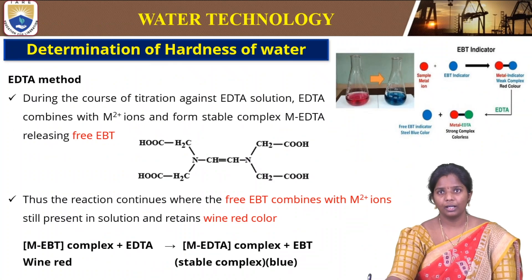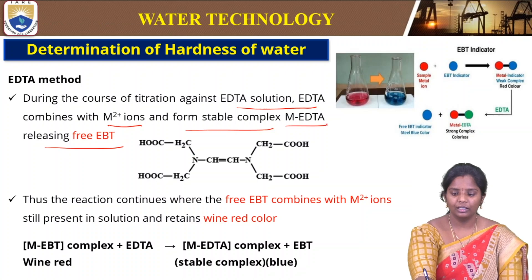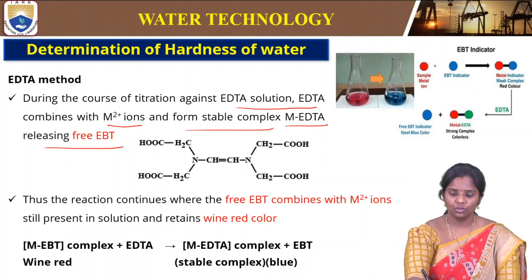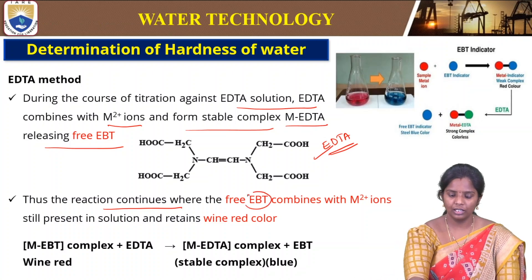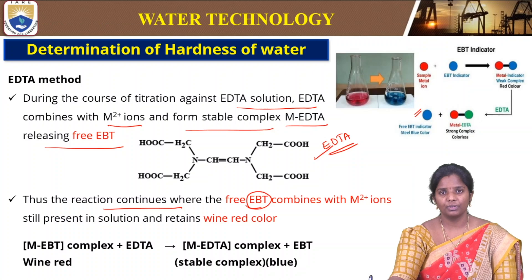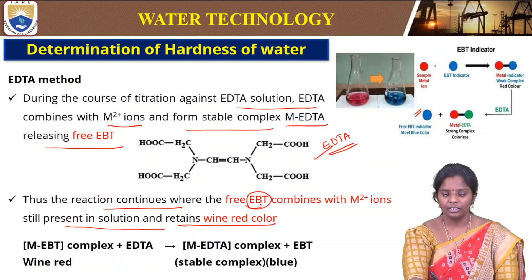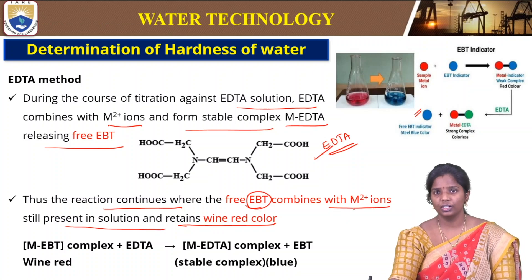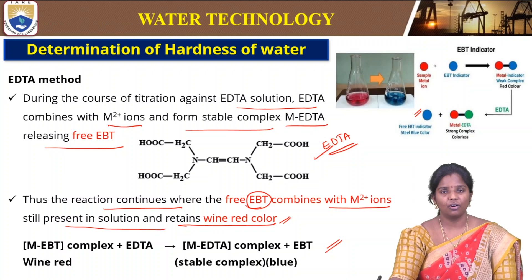During the course of titration, EDTA combines with metal ions to form a stable metal-EDTA complex, releasing the EBT indicator. This free EBT indicator again combines with other calcium and magnesium ions still present in the water and continues the reaction, retaining the wine red color until all metal ions are consumed. This is the reaction and method used to determine the hardness of any water sample.